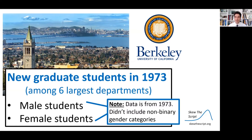The data in the original dataset is broken down into male students and female students. Note this dataset is from 1973. At the time, their intake forms for admitted students didn't have non-binary gender categories. In more modern datasets, you're going to see a wider array of gender categories. However, we don't have that here. That said, we can still investigate the data that we do have to see if there are any important trends that we should be considering.